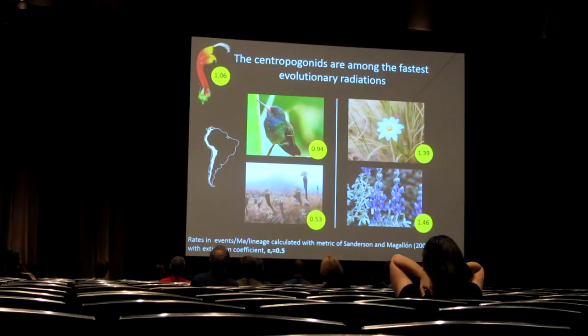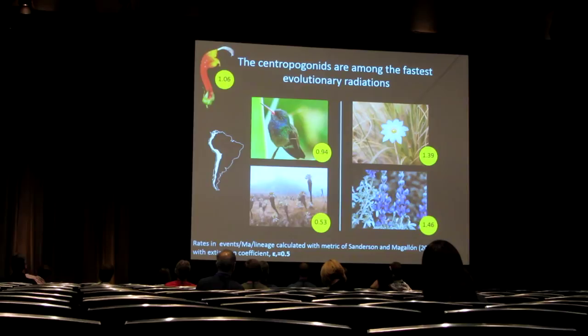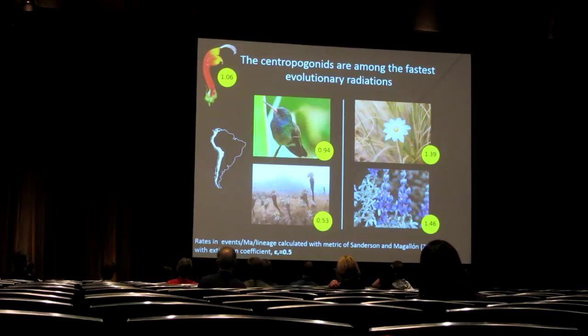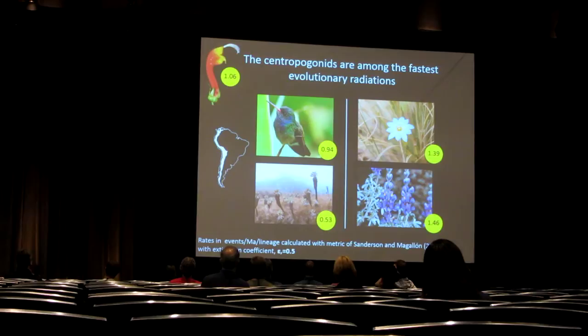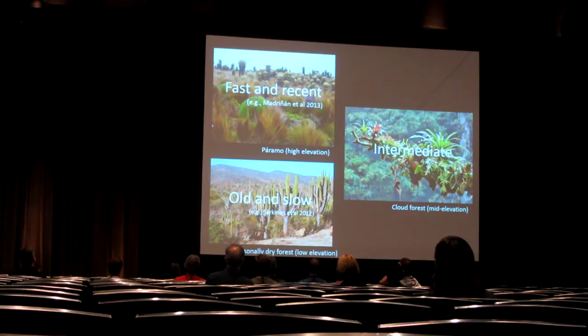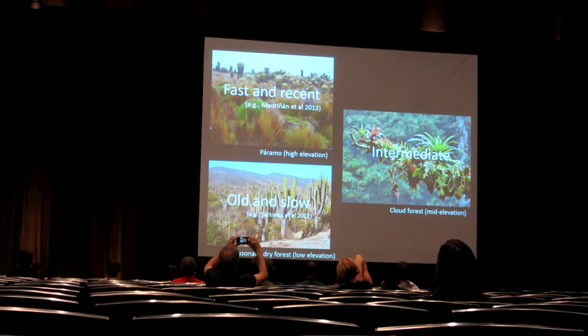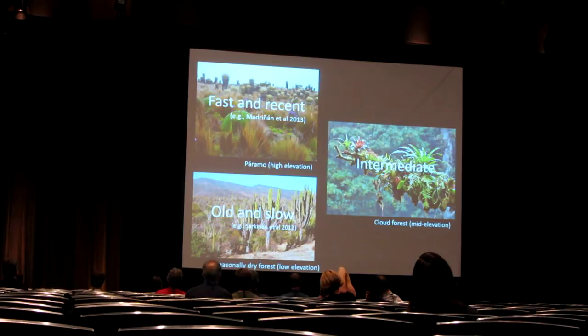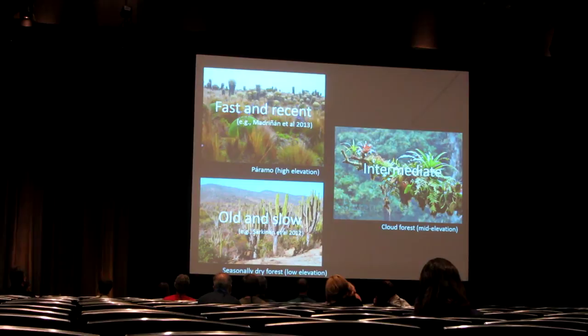Among Andean lineages, they're faster than groups like Andean-associated hummingbirds and the very emblematic Espeletia. However, there are many Andean lineages that are much faster than neotropical bellflowers, and importantly those are all Paramo lineages. This provides us some insight into that earlier question mark. We can now begin to say that cloud forest plant diversification is very much intermediate between its neighbors above them on the mountains — the fast and recent Paramo flora — and below them, the older and slower seasonally dry forest taxa.